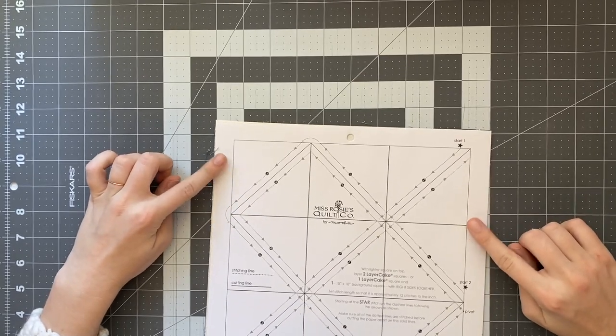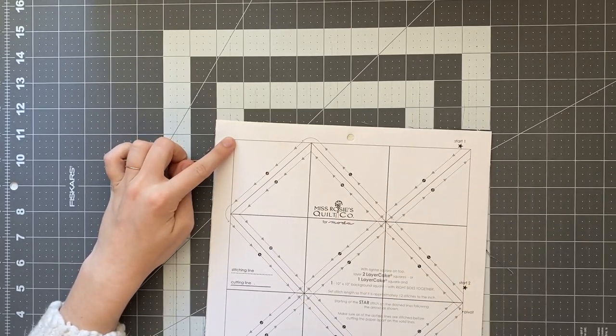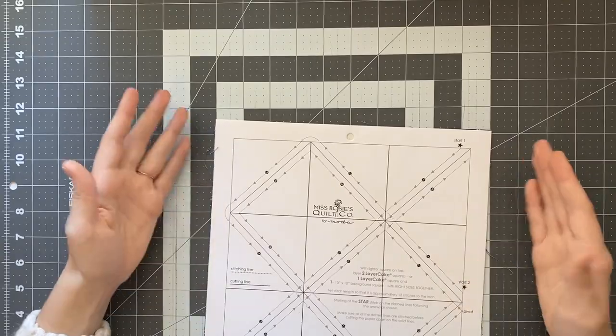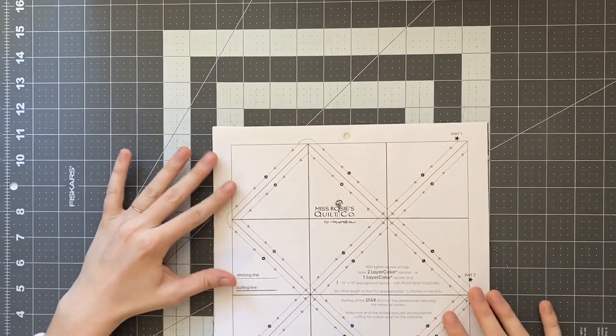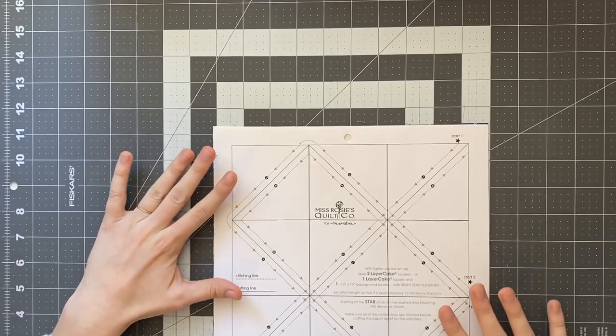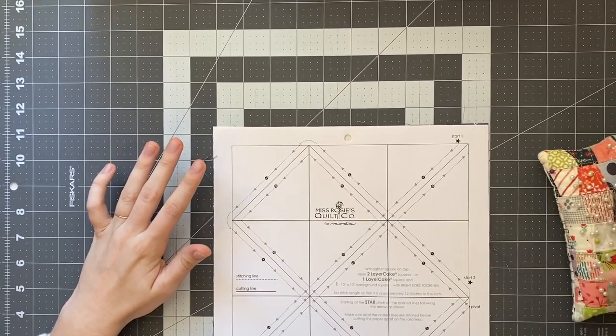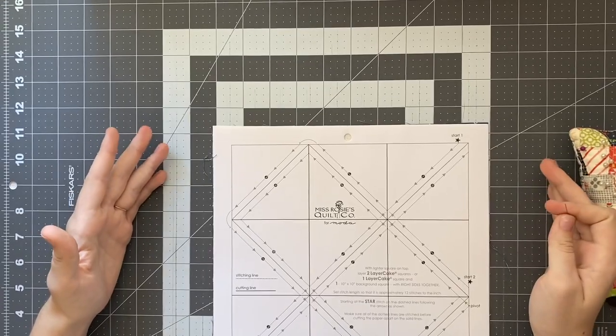So you're gonna end up cutting on this smaller line so if you're cutting your own fabric and it's kind of wonky a little bit it's okay it's not gonna be the end of the world. So now you're gonna lay your paper on top and I'm gonna grab some pins and I'm just going to pin it at a few crucial points.